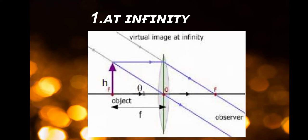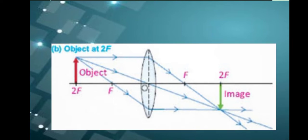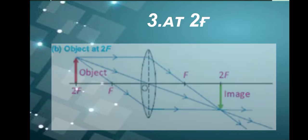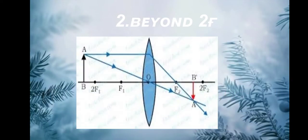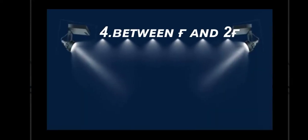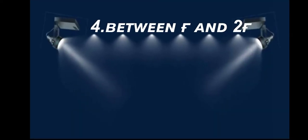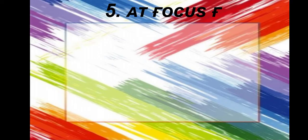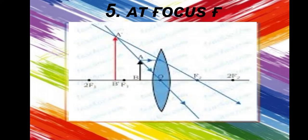Now let us see the ray diagrams: when the object is at infinity, at 2f, beyond 2f, between f and 2f, at focus, and between f and o.